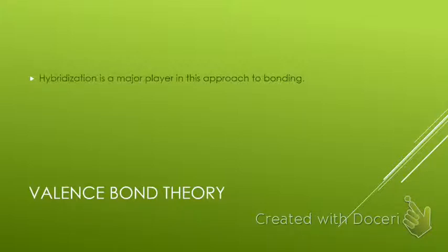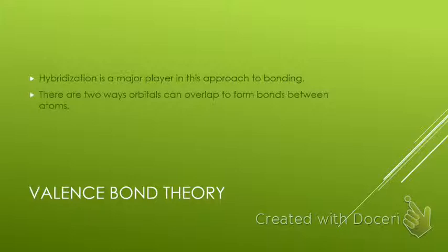We're not going to be covering bond order necessarily in this class. You can save that for higher-level chemistry classes. Valence bond theory actually relies a lot upon hybridization, and we've been doing this in class without really specifically stating this is valence bond theory. So hybridization is very important in this. And there are two ways that the orbitals can overlap to form bonds, essentially according to this.